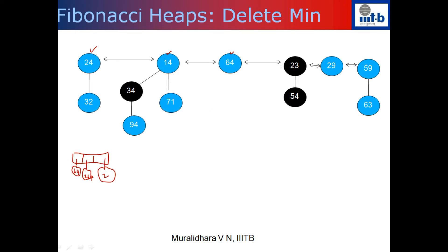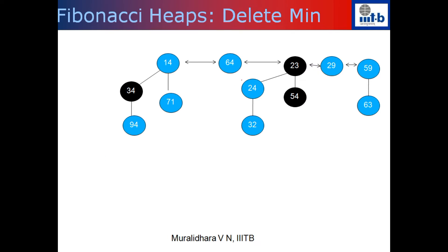Now I go to 23. Node 23 has rank 1. I check the table and see there is another element of rank 1 - it's pointing to 24. That means both trees rooted at 24 and 23 have the same rank. Our algorithm says to merge these two. When I merge these two trees, 23 is smaller than 24, so 23 continues to be the root of the merged tree. After merging, I get this structure.